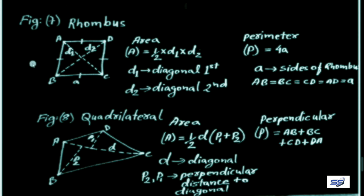If the given figure is a rhombus — see figure 7 — the geometrical shape is a rhombus.